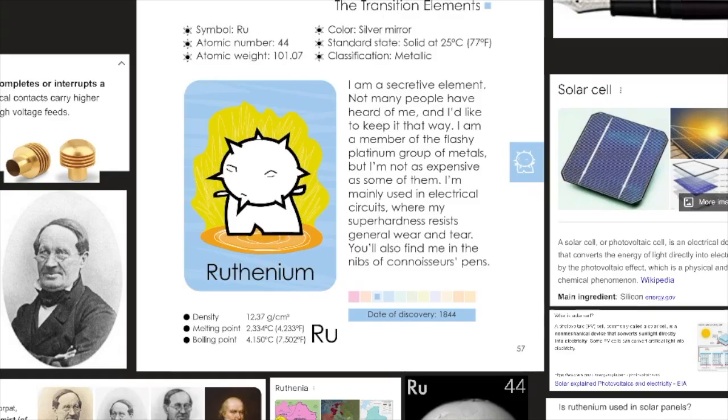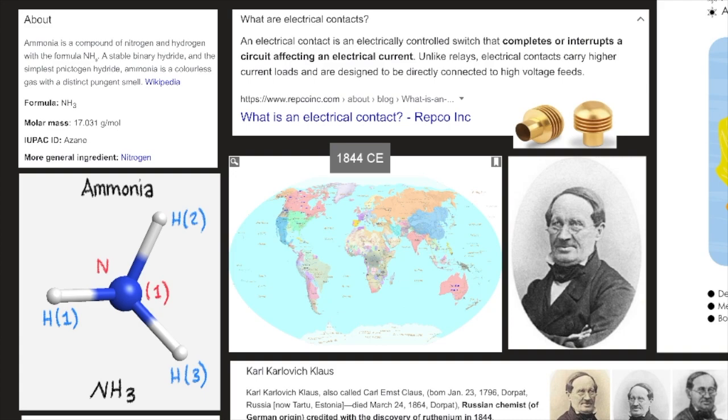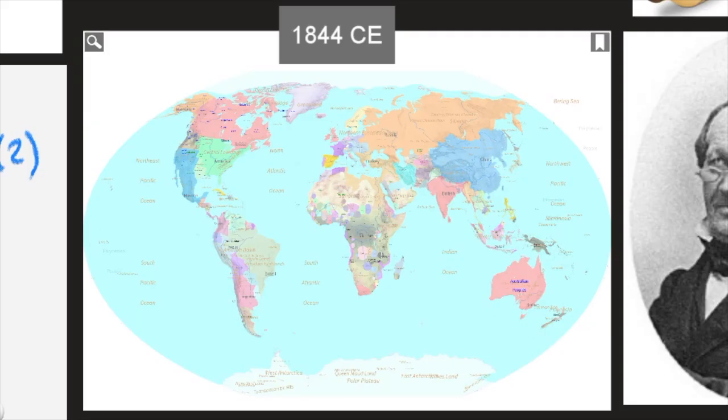Ruthenium's density is 12.37 grams per centimeters cubed. Its melting point is 2,334 degrees Celsius, or 4,233 degrees Fahrenheit. Its boiling point is 4,150 degrees Celsius, or 7,502 degrees Fahrenheit. Ruthenium's date of discovery was in 1844. Here's a map of 1844 CE.